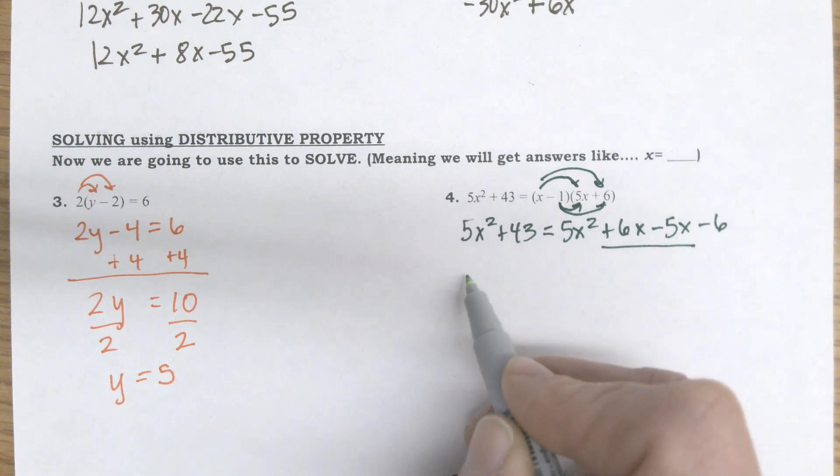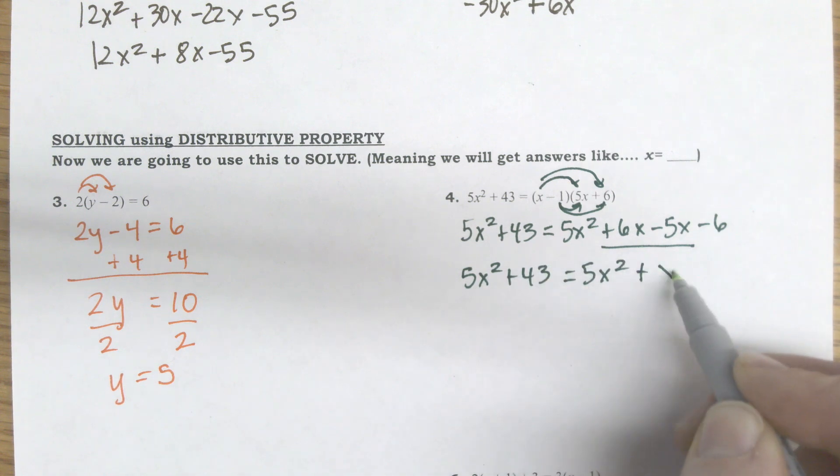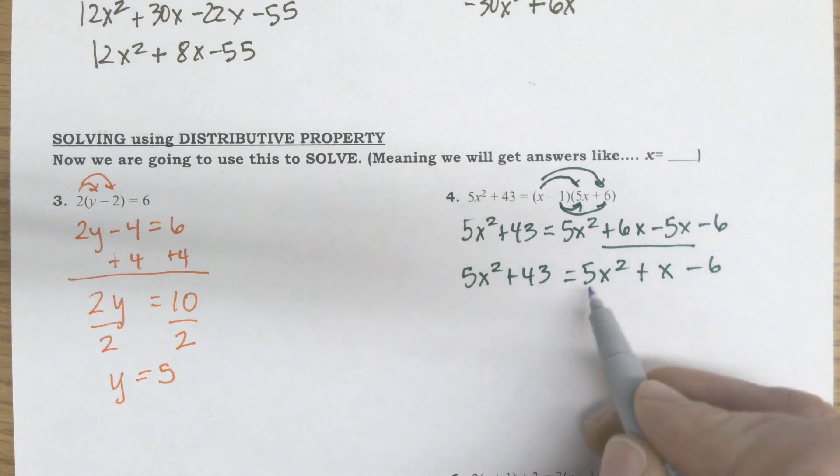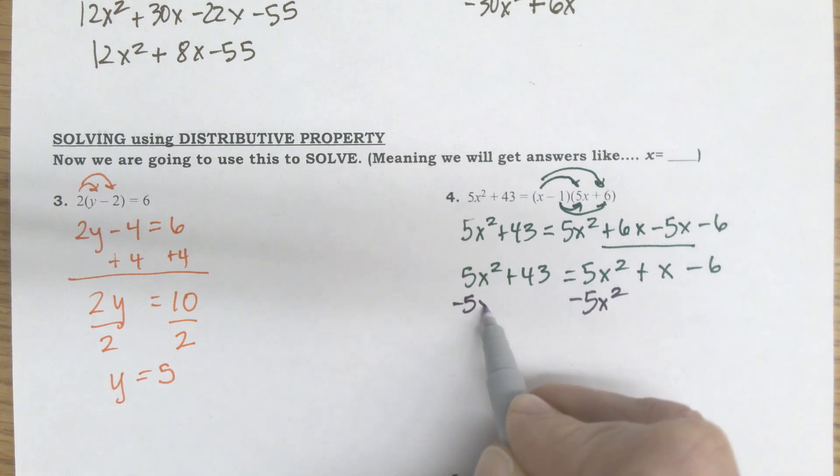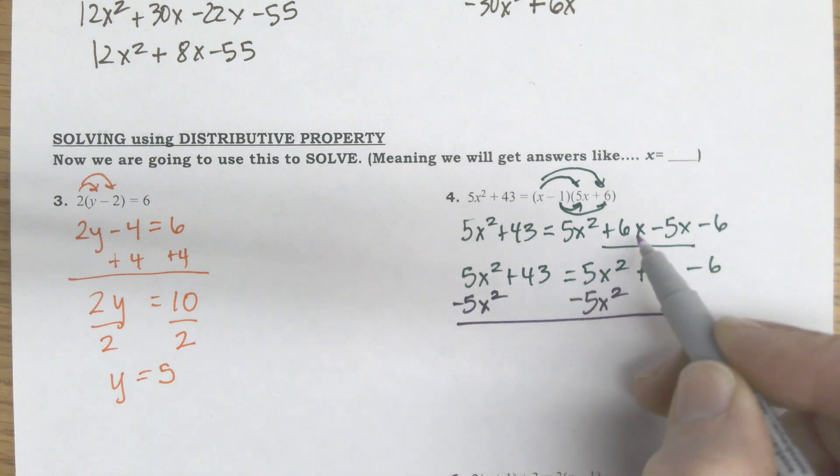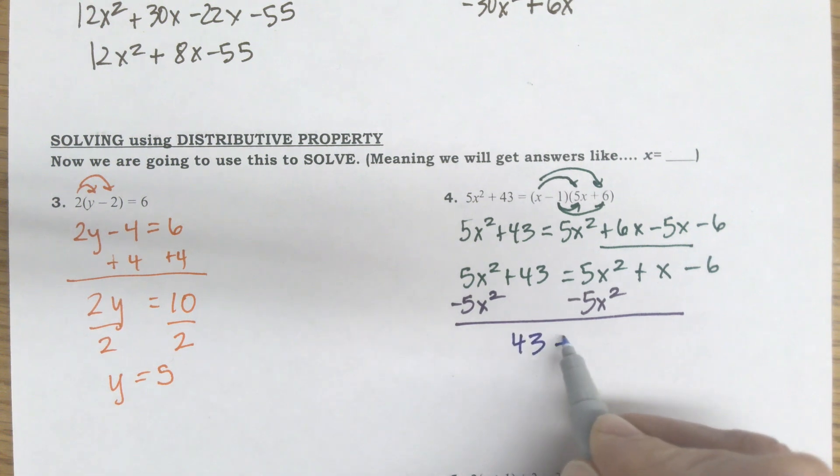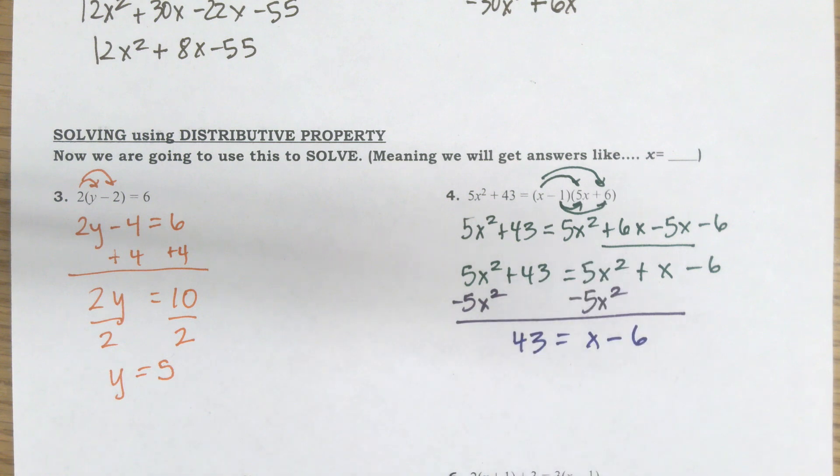I'm going to combine like terms. So now I have 5x squared plus 43 equals 5x squared plus x minus 6 because 6 minus 5 is 1. I don't need to write the 1 there. Now I need to start cleaning this up a little bit. And so I'm going to do that. This might be new to some of us. I'm going to do that by starting to get rid of anything that is squared. If I subtract 5x squared from both sides, I actually remove that 5x squared on both sides of the equation, which leaves me then with 43 equals x minus 6.